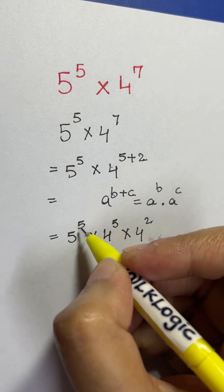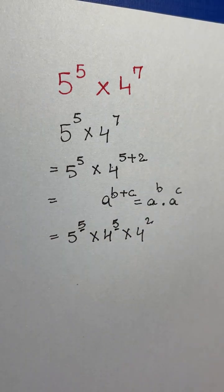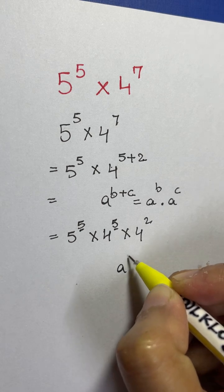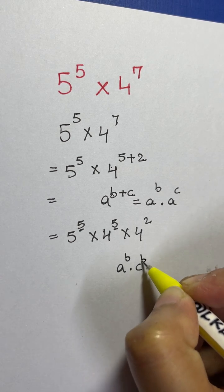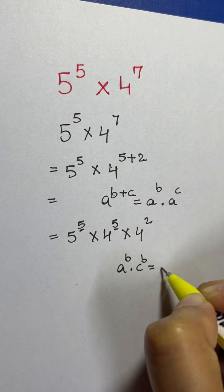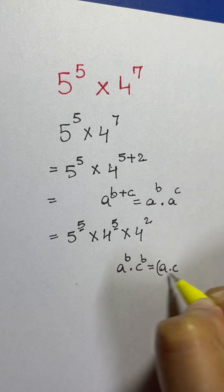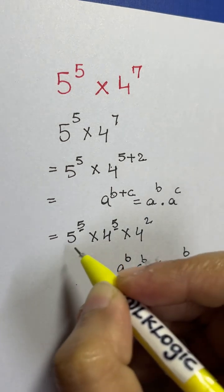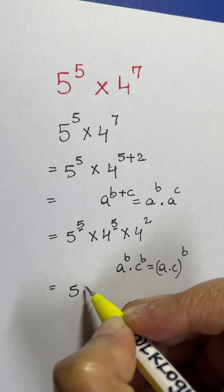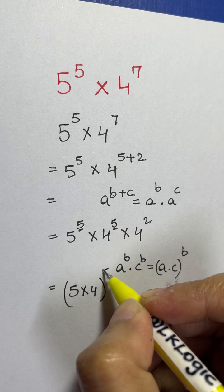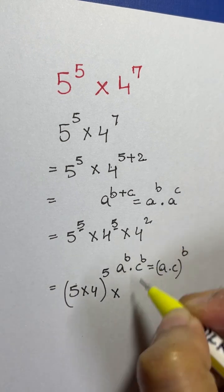Now notice we have the same exponent 5 on both 5 and 4. Using the formula a^b times c^b equals (a times c)^b, we can combine them: 5⁵ times 4⁵ becomes (5 times 4) to the power of 5, which is 20 to the power of 5, times 4 squared.